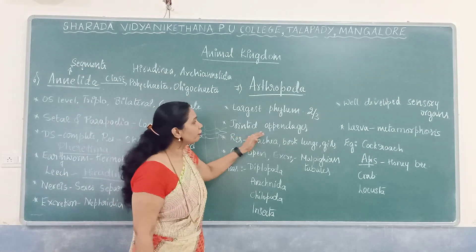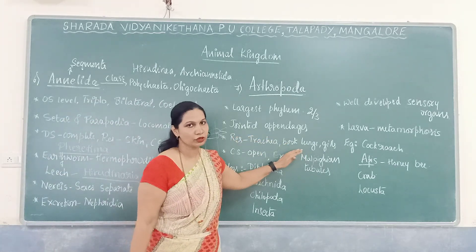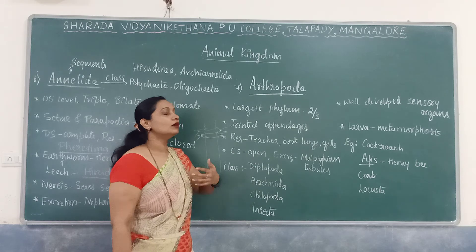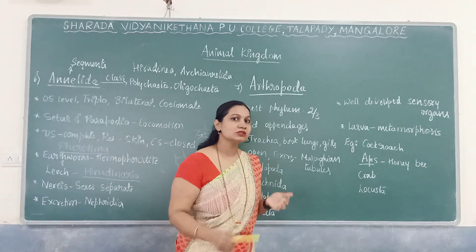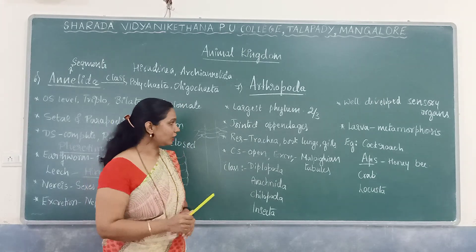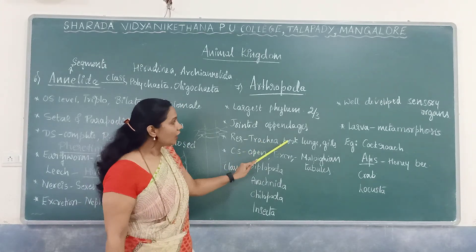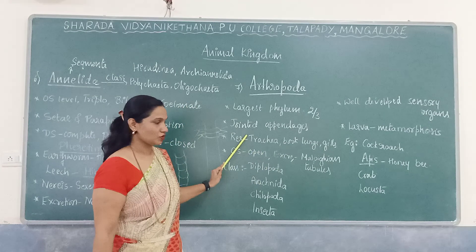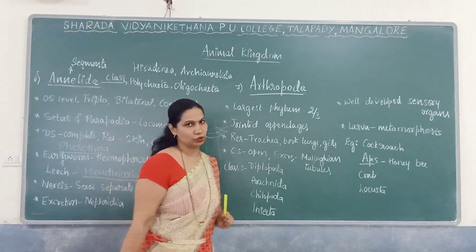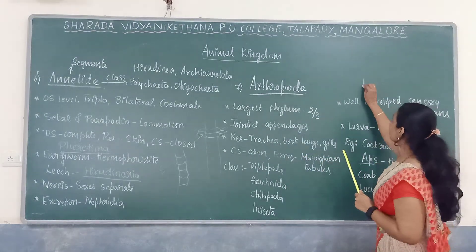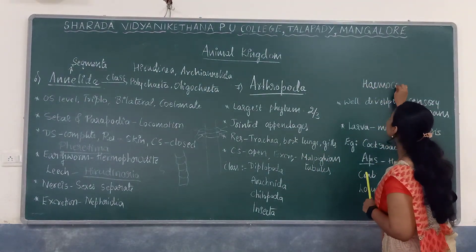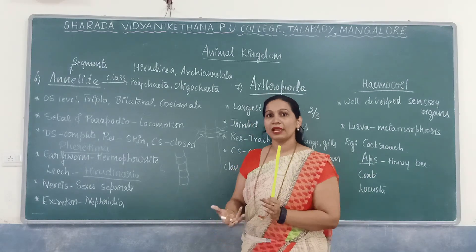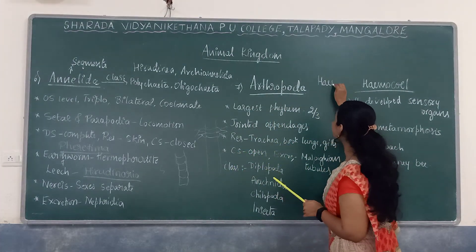Regarding respiration, different organisms have different respiratory organs. Arthropoda includes insects as well as aquatic organisms such as crab and prawns. They have trachea, book lungs, and gills as respiratory structures. Their circulatory system is open circulation, with a structure known as haemocoel — a cavity containing a blood-like fluid called haemolymph, as seen in cockroach.